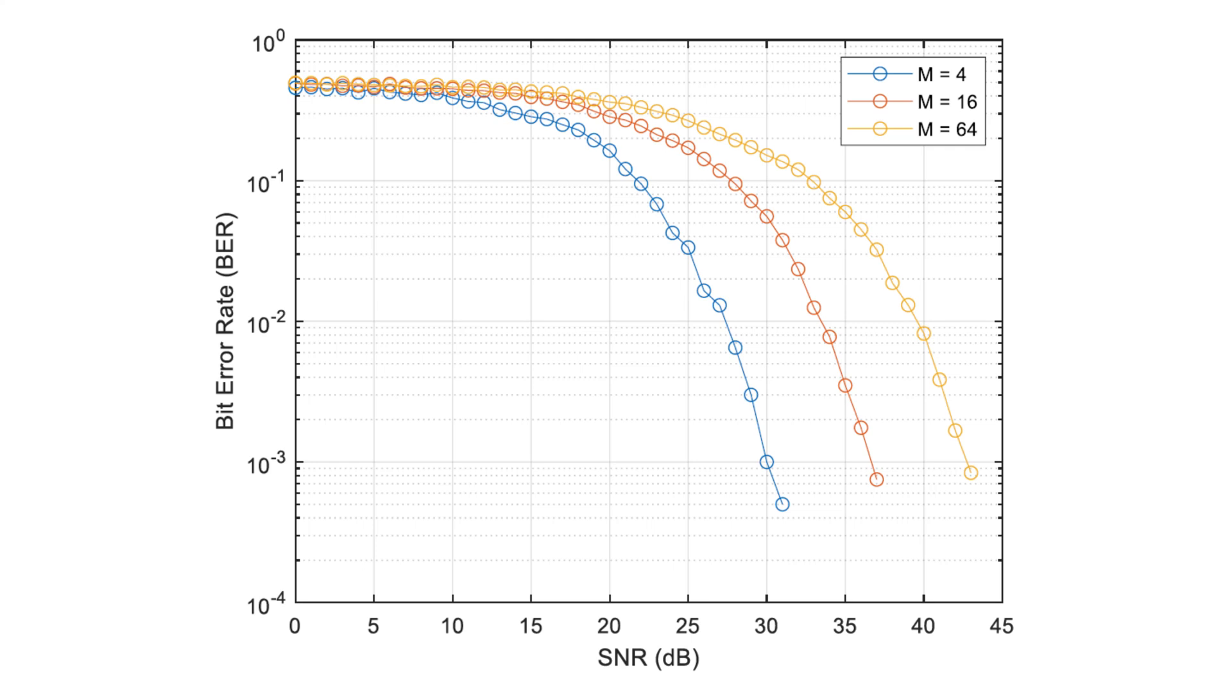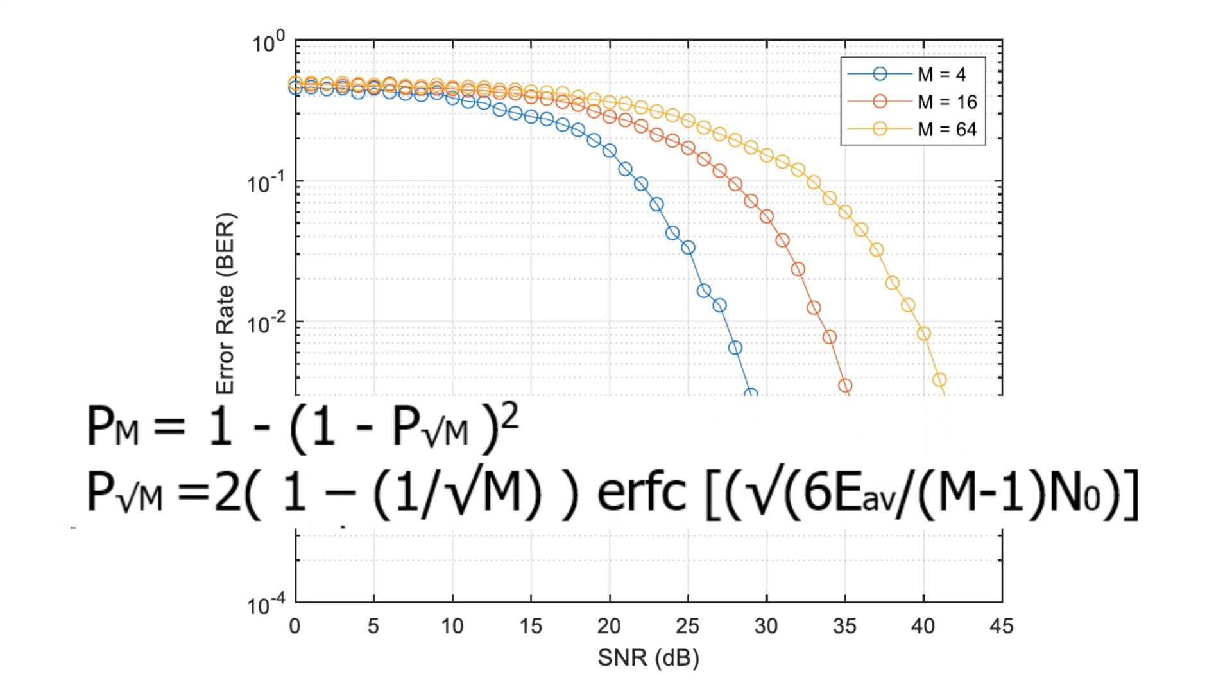This simulation demonstrates the transmission of data using QAM modulation and evaluates its performance in a noisy channel. By varying the modulation order M and the SNR, we can observe how the system's error rate changes and compare the results to theoretical predictions.